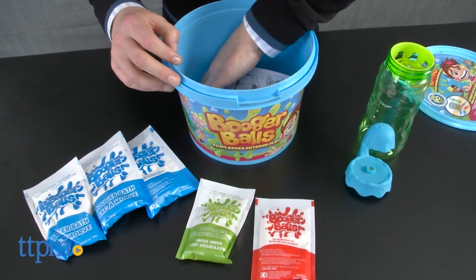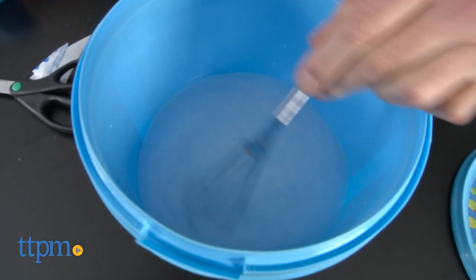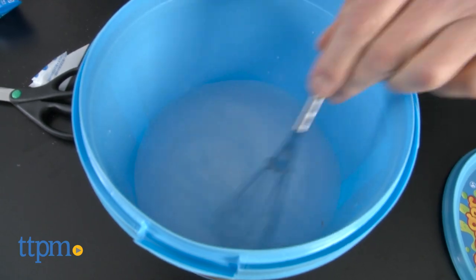Let's start by making the booger bath. Pour 25 ounces of water into the bucket, or use a bowl or other bucket with your own sets. Stir it up and let it sit.